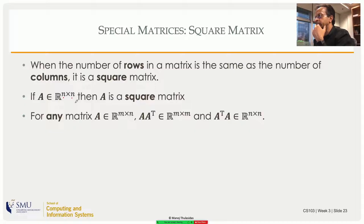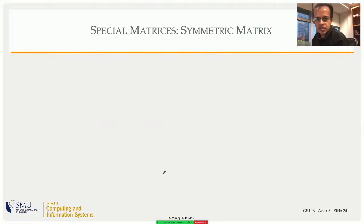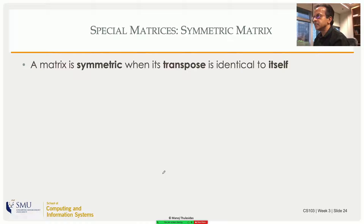For any matrix A of shape m by n, even if m and n are not the same, A times A-transpose is a member of R m by m, and A-transpose times A is a member of R n by n. They are both square matrices. Now let's look at another definition: the symmetric matrix.